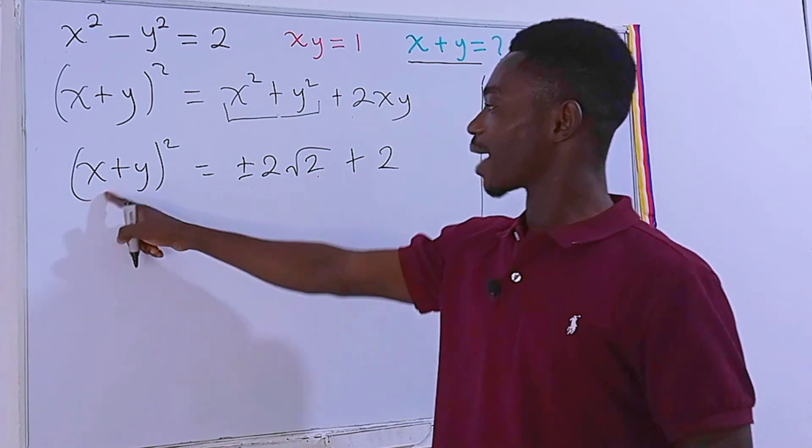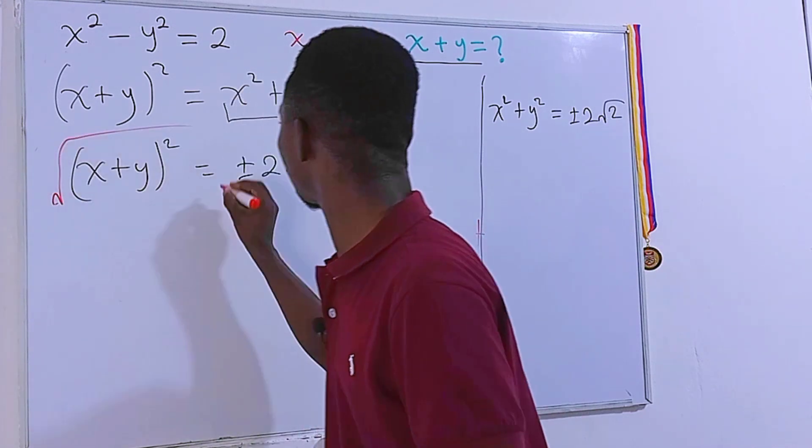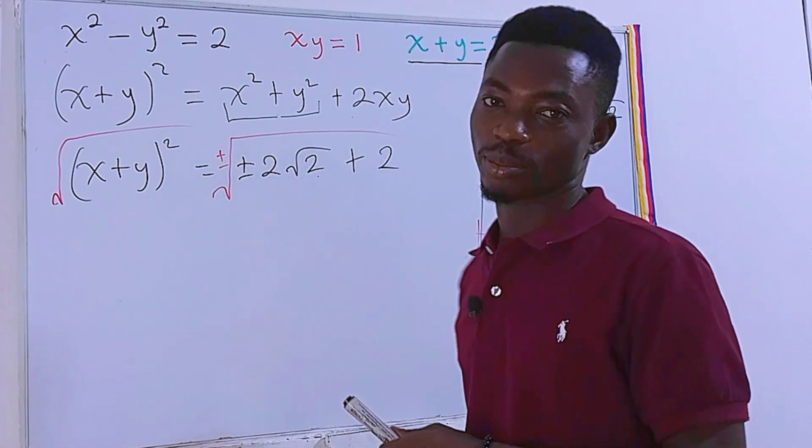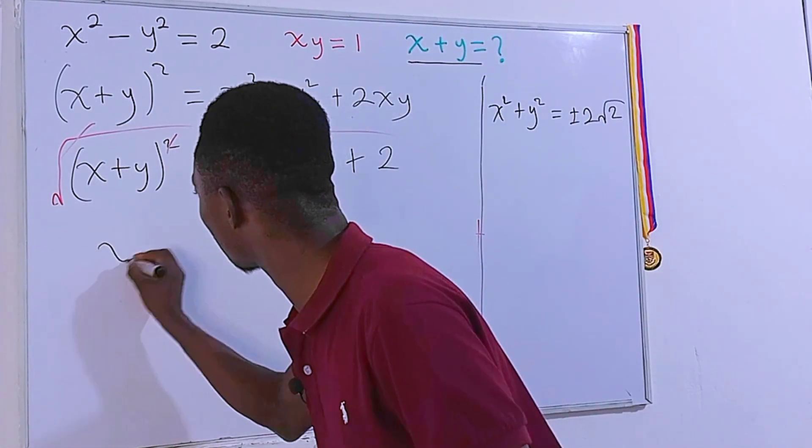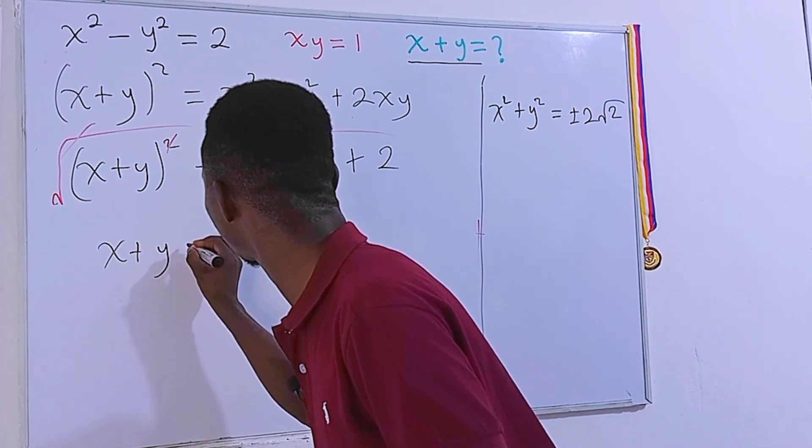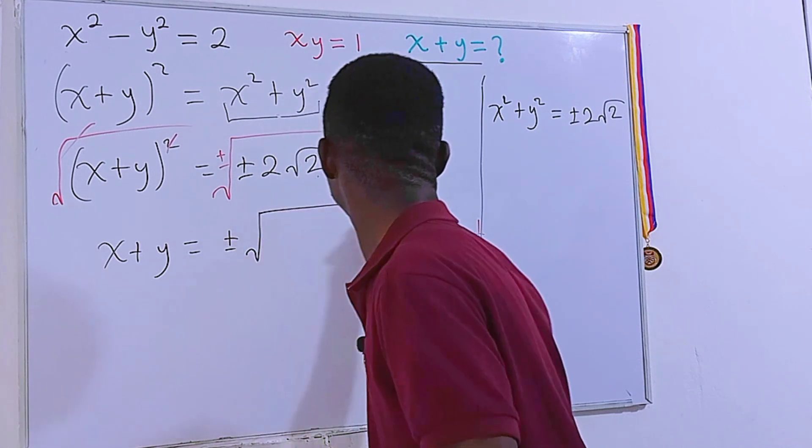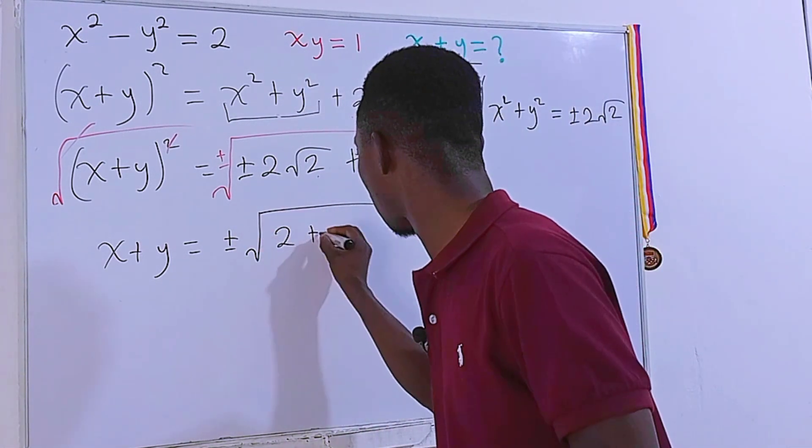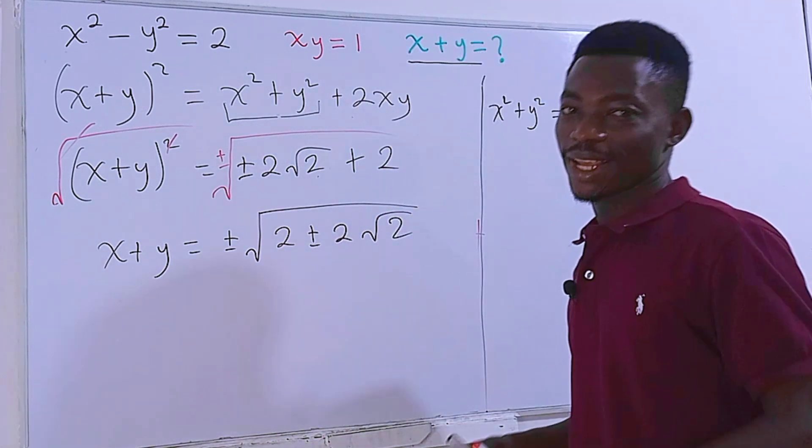We are looking for x plus y. So basically, we can take square root on each side of the equation once again. And plus or minus is still important. This will cancel out this. On the left-hand side, we'll be left with x plus y is equal to plus or minus square root of 2 plus or minus 2 square root of 2.